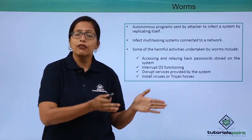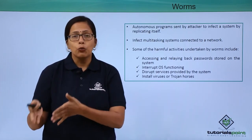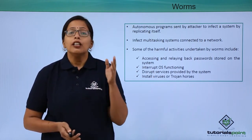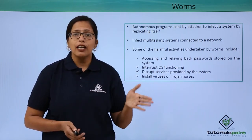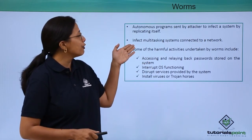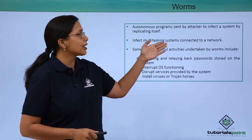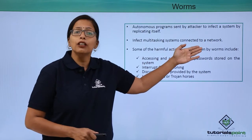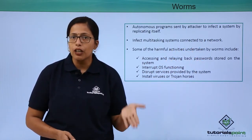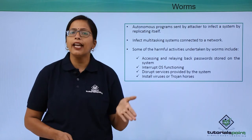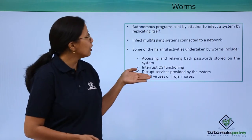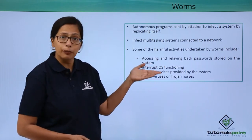So what is the difference between a virus and a worm? Because we have learned earlier that a virus also replicates itself. The virus affects a standalone system, but a worm will always infect a multitasking system connected to a network. So if your system is connected to a network, only then can it be infected by the worm.